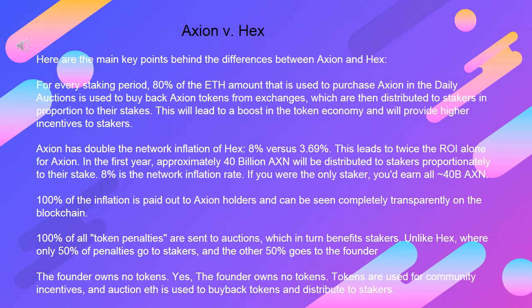For every staking period, 80% of the ETH used to purchase Axion in the daily auctions is used to buy back Axion tokens from exchanges, which are then distributed to stakers in proportion to their stakes. This will lead to a boost in the token economy and higher incentives to stakers. Axion has doubled the network inflation of HEX: 8% versus 3.69%, leading to twice the ROI.